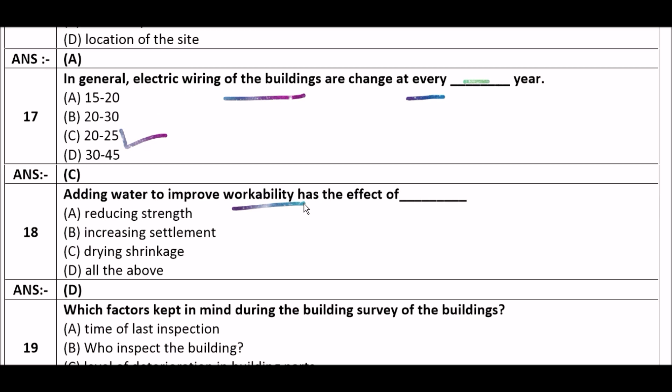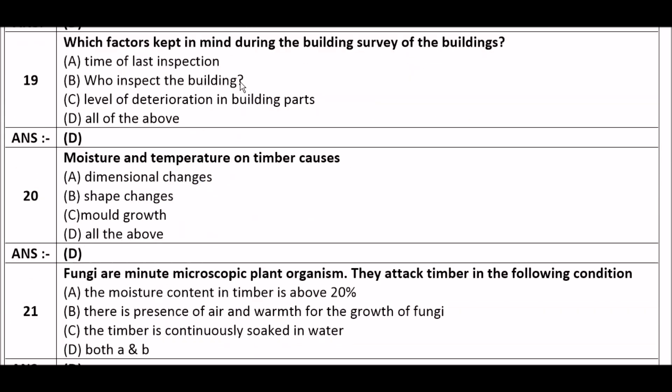Next question: Adding water to improve workability has the effect of — option A: reducing strength, option B: increasing settlement, option C: drying shrinkage, option D: all of the above. The right answer is option D — all of the above. Adding water to improve workability has the effect of reducing strength, increasing settlement, and drying shrinkage.